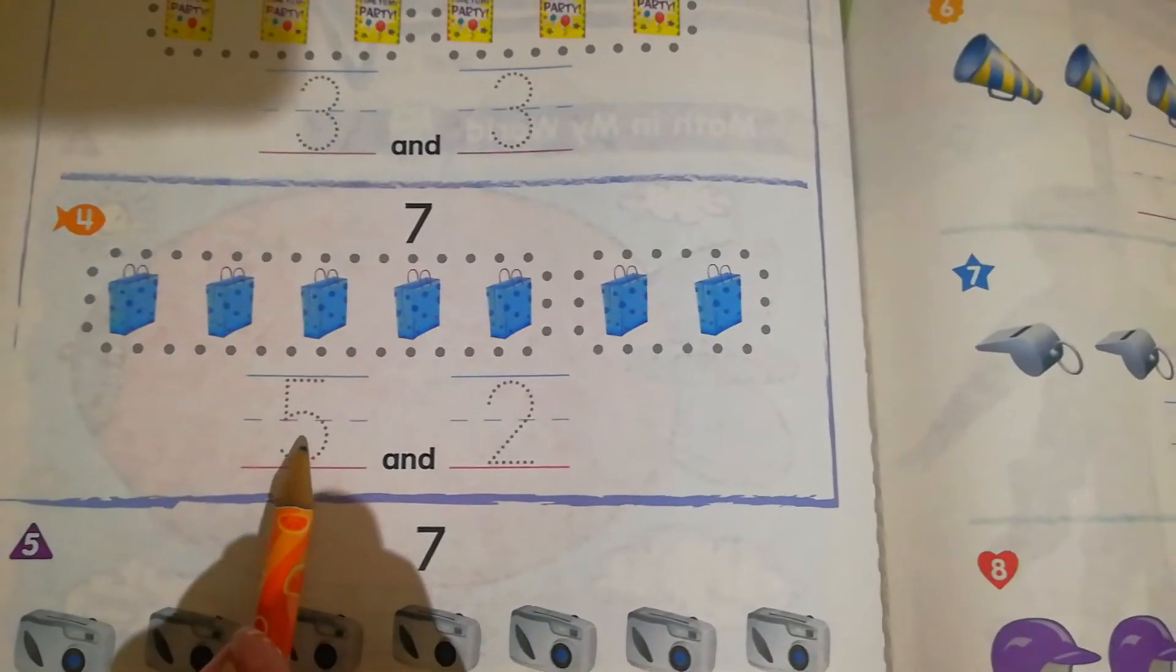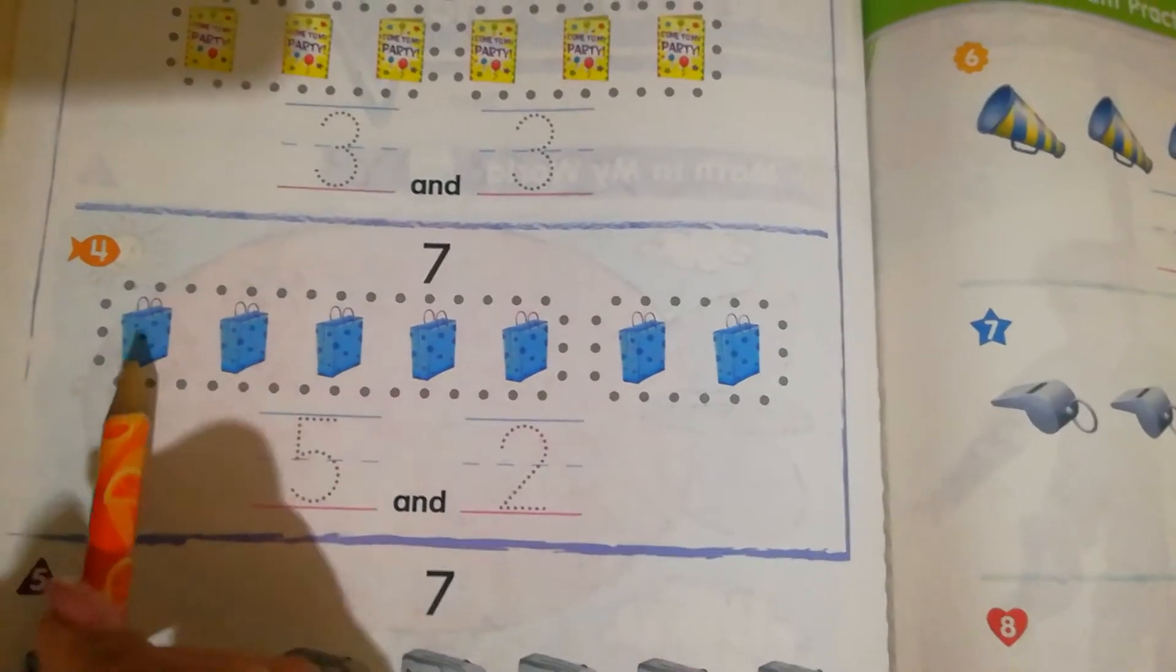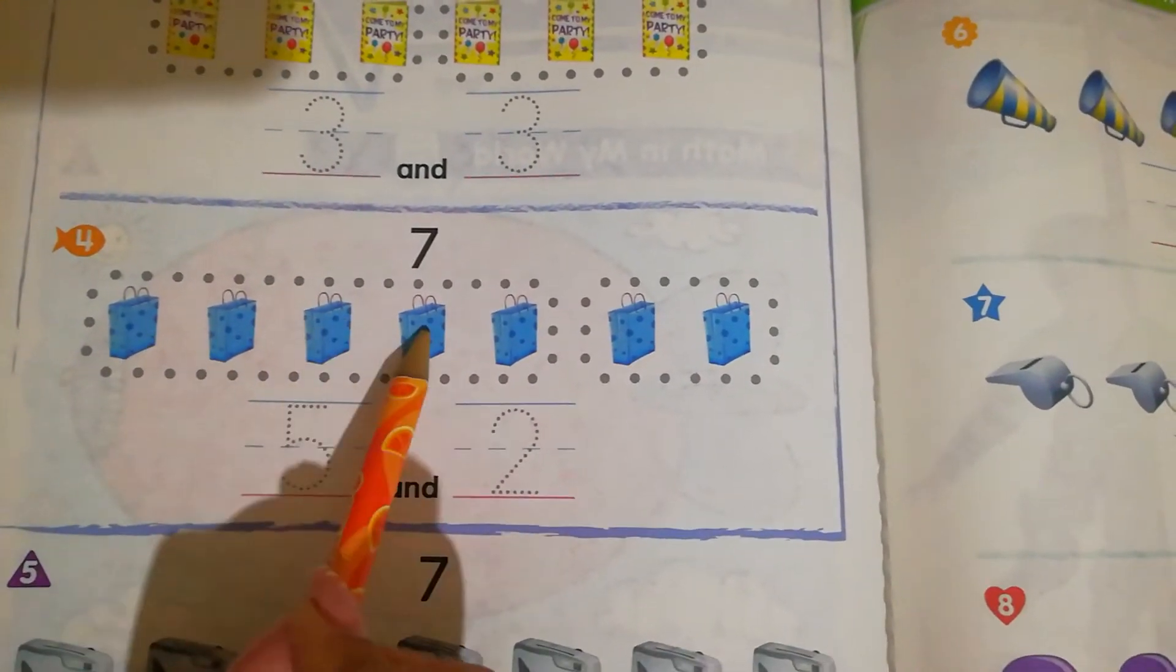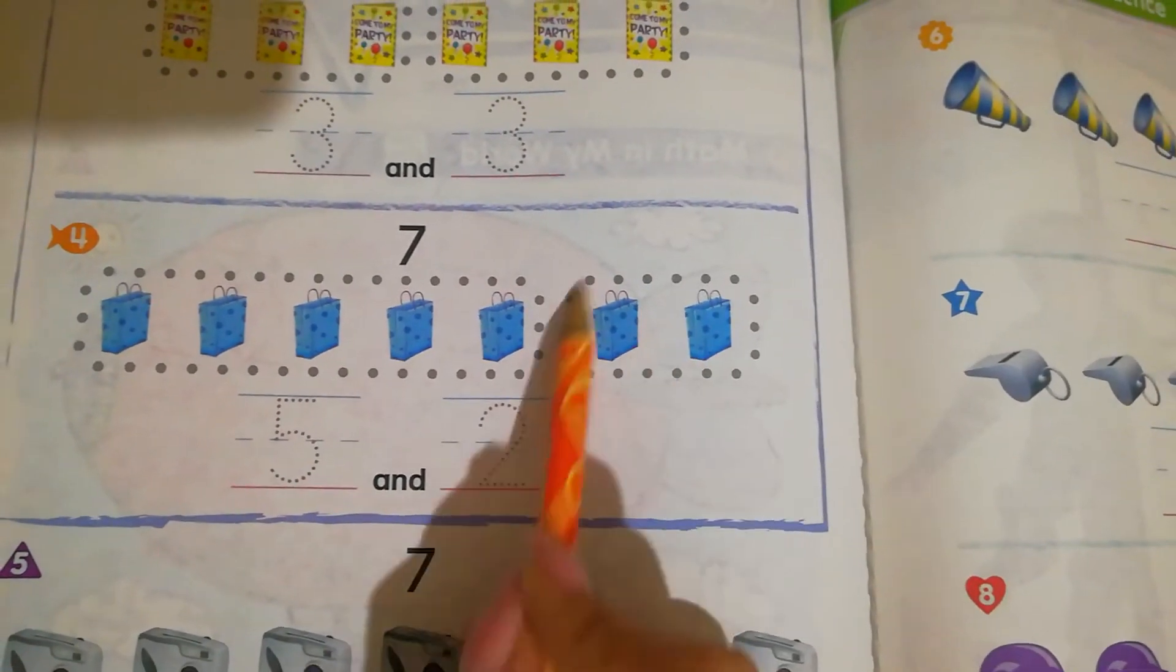Here this example is done with five and two, so we can put one, two, three, four, five in the first group and one, two in the second.